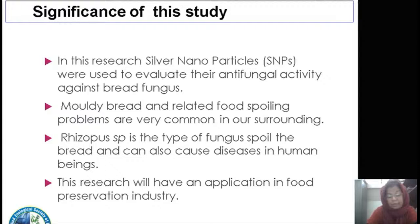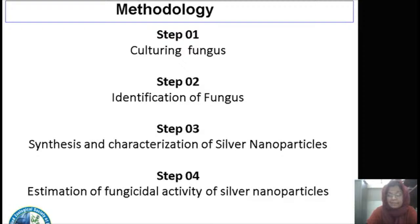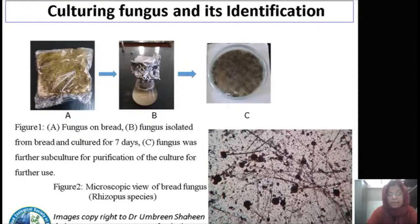Rhizopus species — bread fungus — spoil food and also cause disease in humans, especially for diabetic patients and those with a compromised immune system. This fungus is very dangerous. The methodology was simple: we cultured the fungus, identified it, then synthesized and characterized our silver nanoparticles, and then estimated the fungicidal activity of our silver nanoparticles.